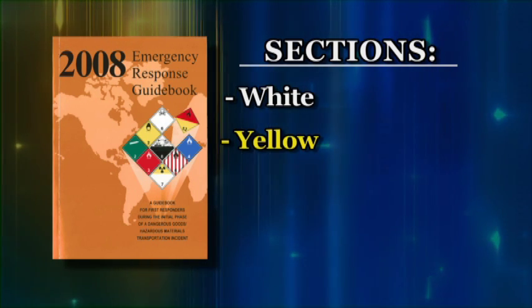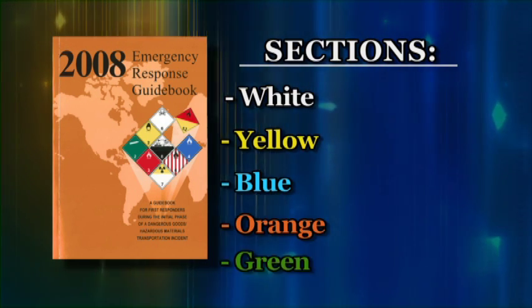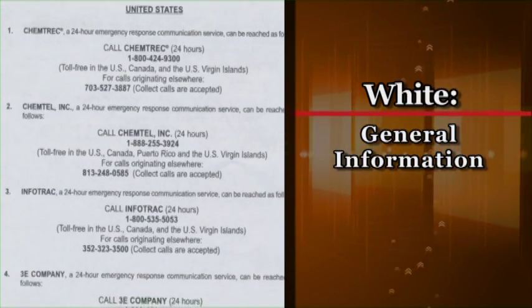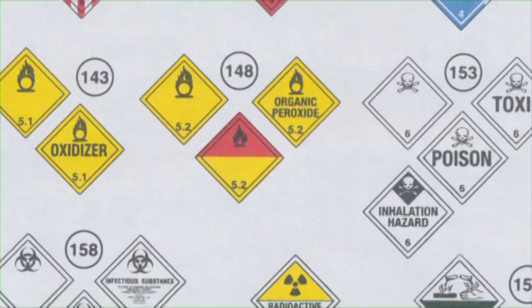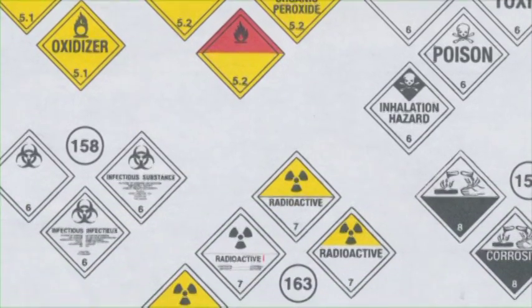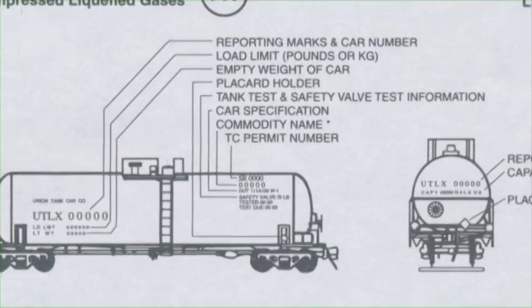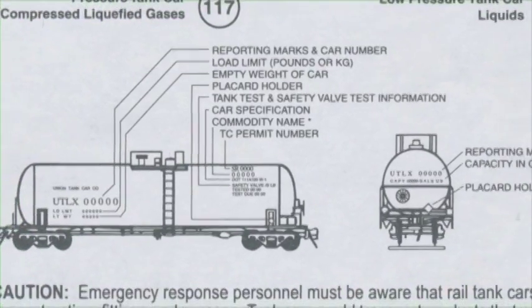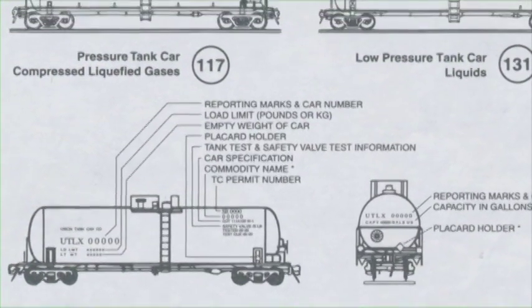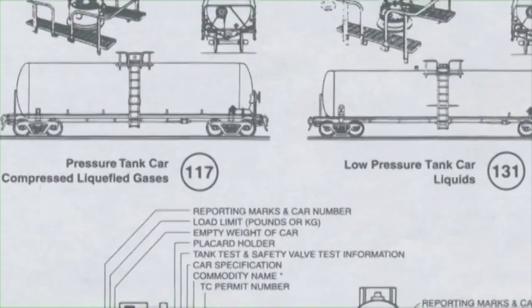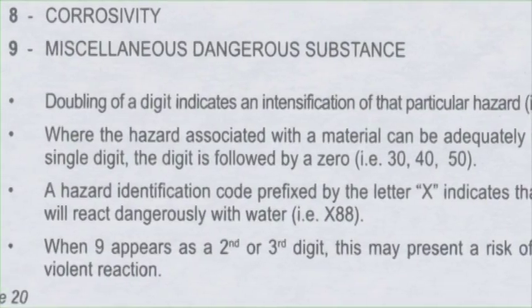The sections are white, yellow, blue, orange, and green. The first is white — it's a general information section. Here you will find a table of placards, which is very useful when an ID number or name is not available. You will also find charts that help you identify rail and road cars, and a list of the hazard identification codes.